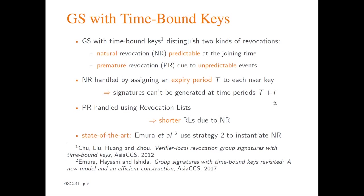That is why Shreu et al. proposed a new variant called group signature with time-bound keys. The main idea is that there are two kinds of revocations. The first is natural revocation — predictable at joining time, such as end of subscription. For example, if you subscribe to a group for one month, you know that signing rights must be revoked in one month.